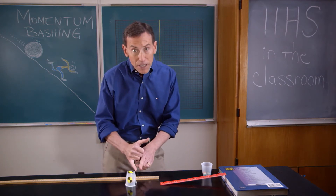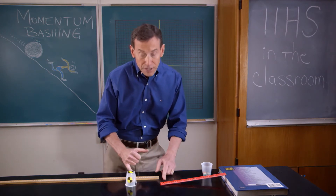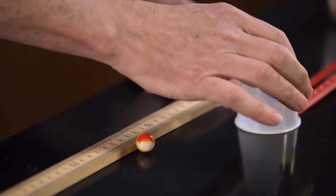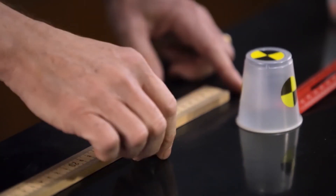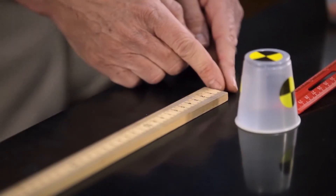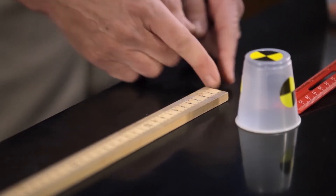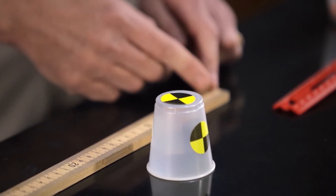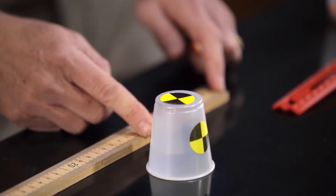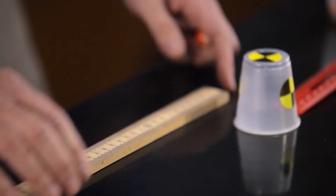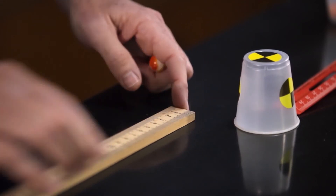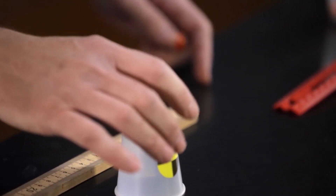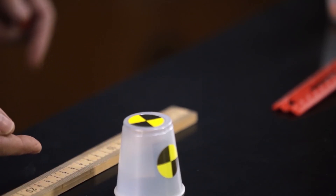So that measurement is very important. You need to be consistent on where you take that measurement from. Notice I had my cup and my ruler lined up so it was right at the front of the cup. So when my cup moved out, I need to make sure I take that measurement to the front of the cup again. If you want, you can start it from the back of the cup — just make sure that when the cup moves out, you take that measurement from the back of the cup.